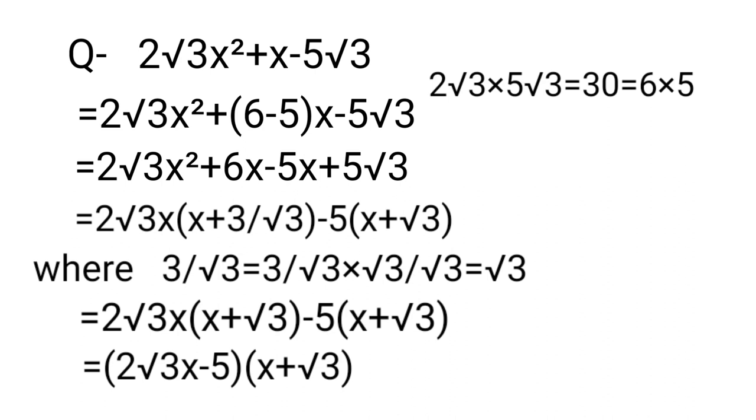We factorize 2√3 × 5√3 = 30 = 6 × 5 and split the middle term: 2√3x² + 6x - 5x - 5√3.